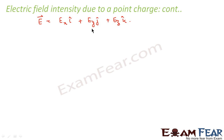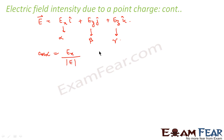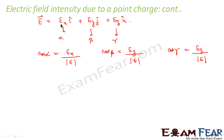Now let us consider the angles which the components make with each other. The electric field along the x-axis will make some angle with the horizontal; similarly for the y-axis. Let the angles be represented by alpha, beta, and gamma. We define cos alpha equals Ex divided by magnitude E, cos beta equals Ey divided by magnitude E, and cos gamma equals Ez divided by magnitude E. These alpha, beta, and gamma are the angles at which the x, y, and z components of electric field are oriented. This is how we define electric field for a point charge.